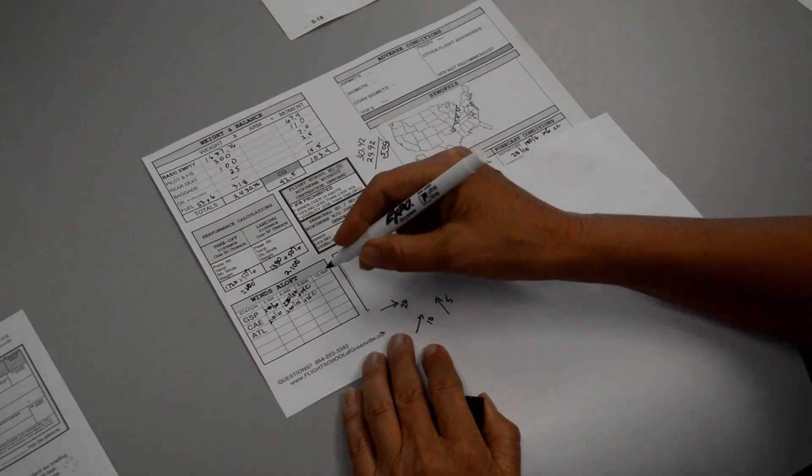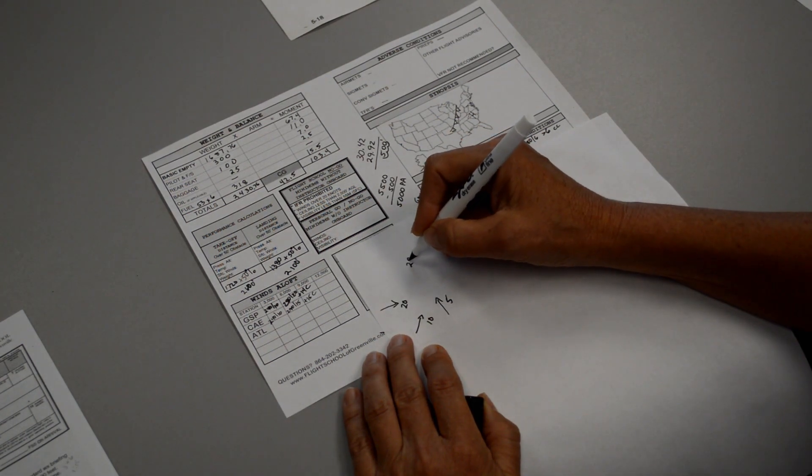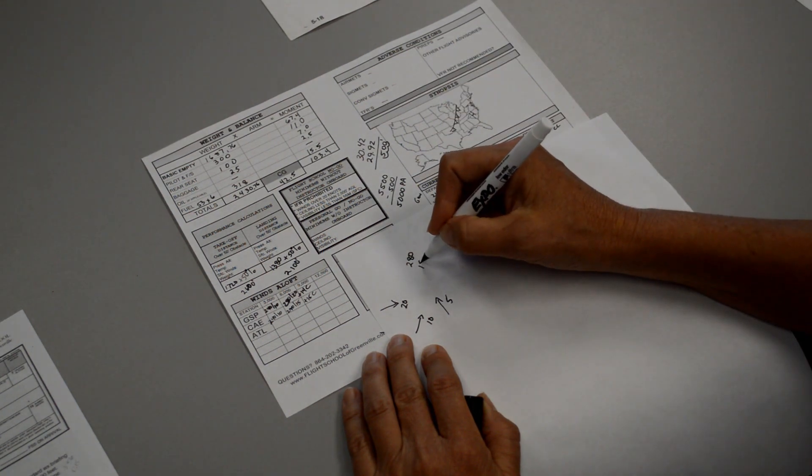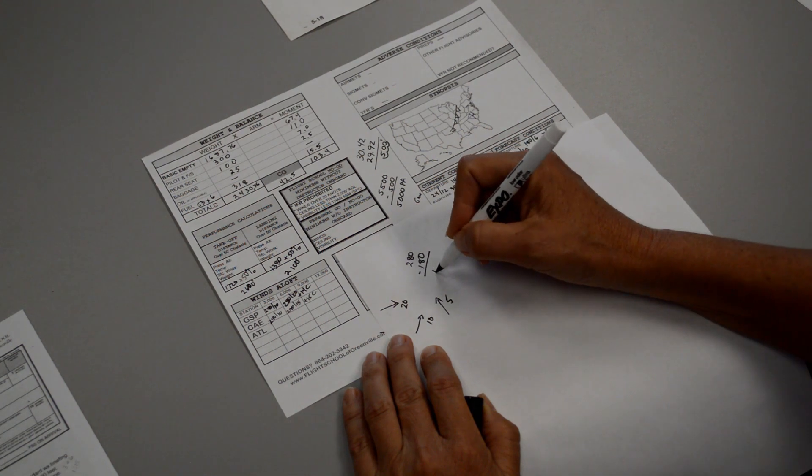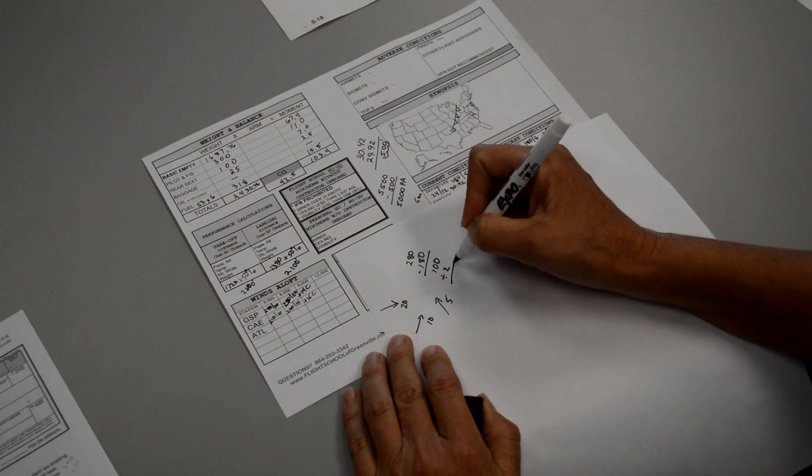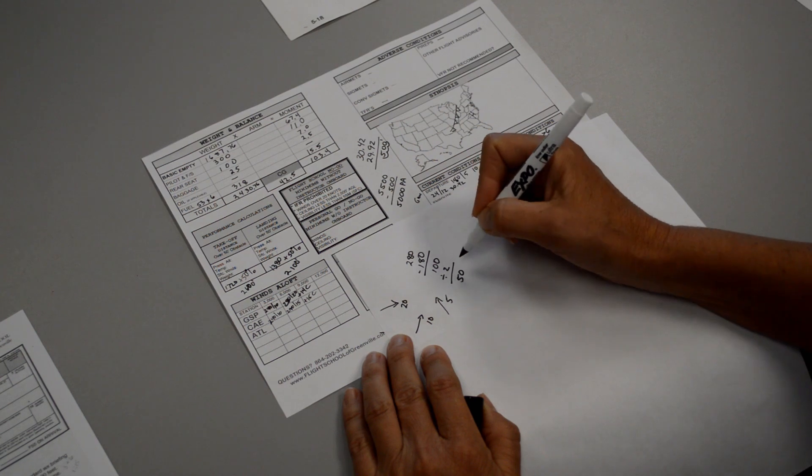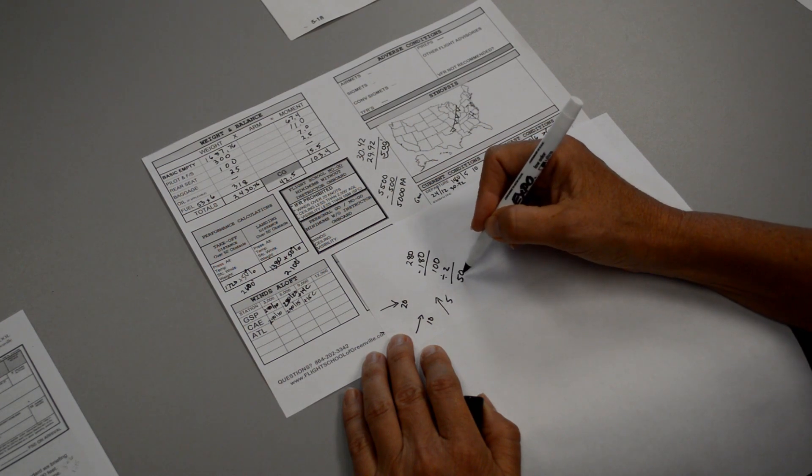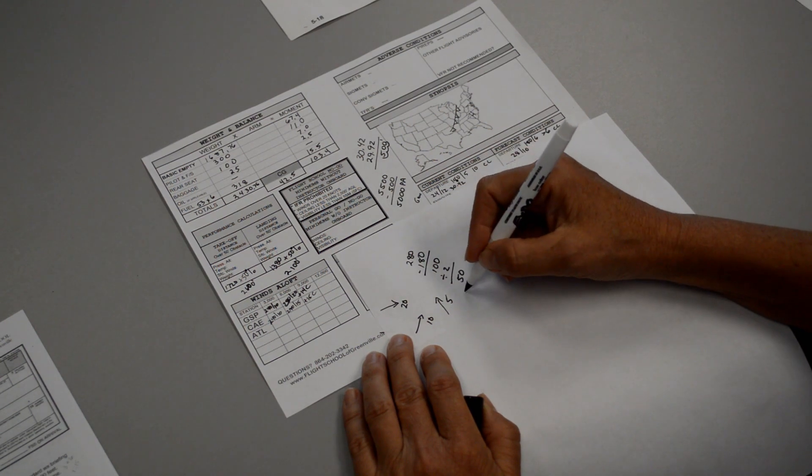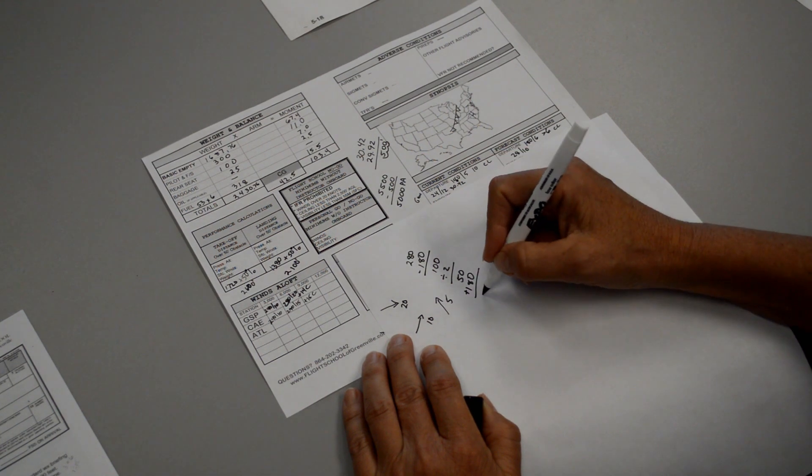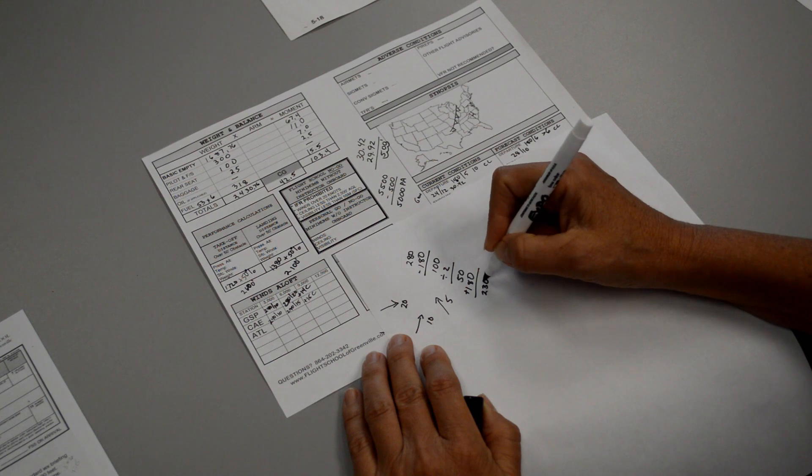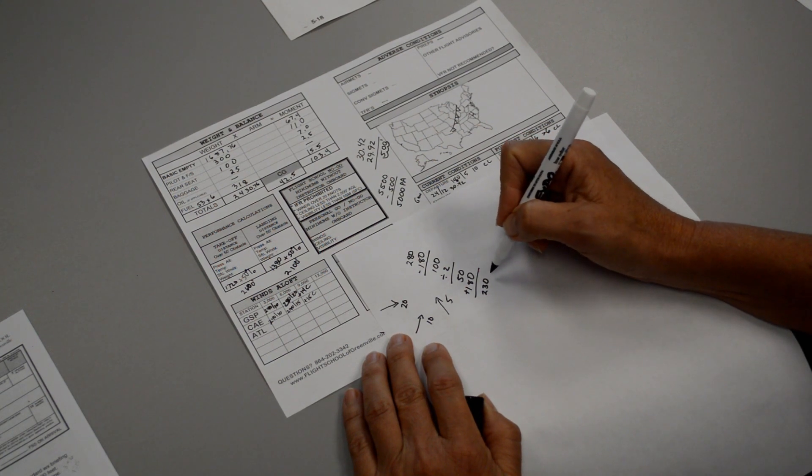The winds at 6,000 feet are 280, and the winds at the surface were 180. So the difference between these is 100, and you divide that by 2, which equals 50. Then we take 50 and add it back to 180. That gives us 230. So we use the wind direction of about 230 degrees.